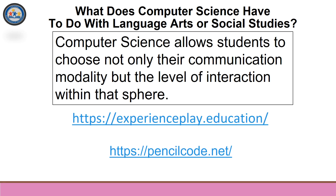Computer science allows students to choose not only their communication modality, but the level of interaction within that sphere. Some possible examples would be to program a choose-your-own-adventure book kind of story. Students could also introduce conditionals and variables in order to reuse code and trigger events later in the story. This teaches both pseudocode and actually writing real code if the project was to be finished, as well as what's called decomposition of both the code and the story in order to do it properly.